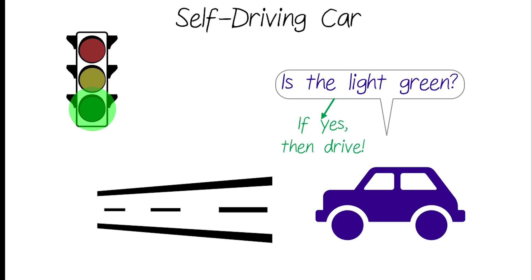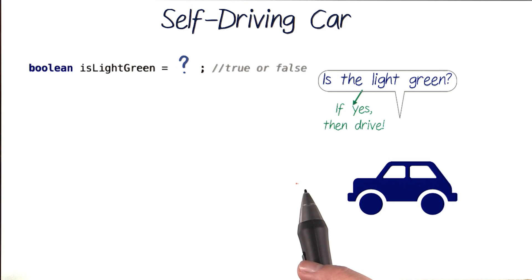We first need to know whether the light is green or not. And if it is, then we want to drive. So let's translate this into Java code.